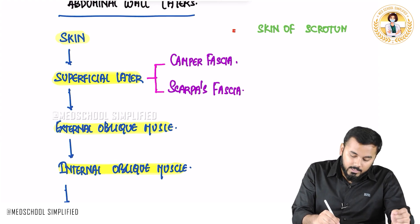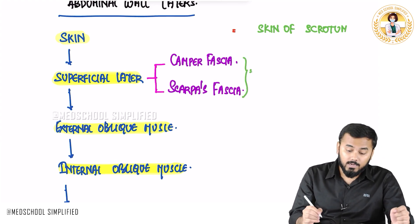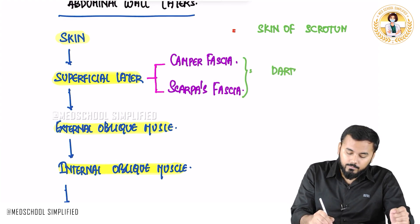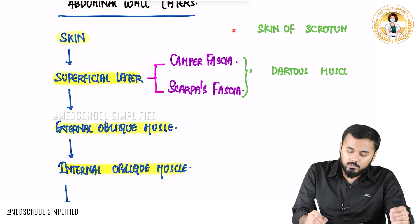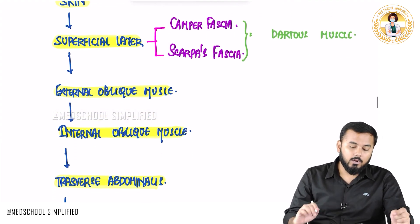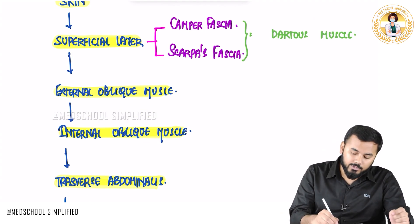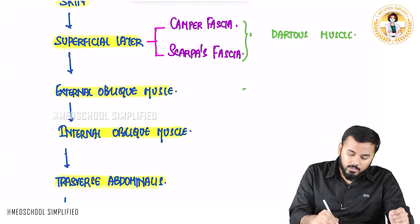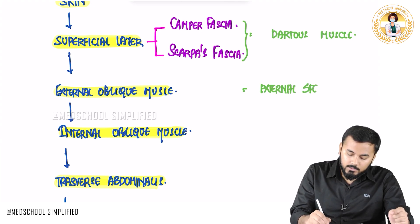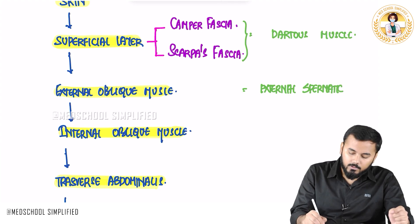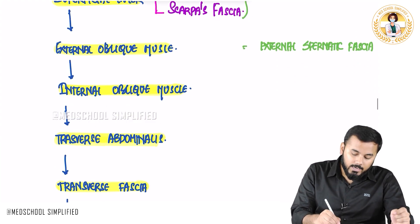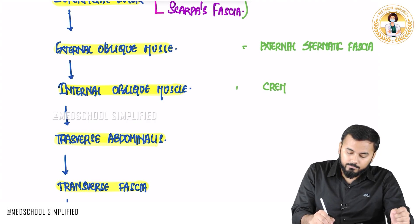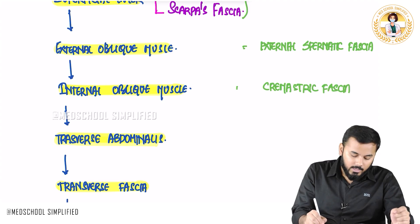Next, the superficial layer — that is Camper's fascia as well as Scarpa's fascia — will continue as the dartos muscle of the scrotum. Next, the external oblique muscle will continue as the external spermatic fascia. And next, the internal oblique continues as the cremasteric fascia.